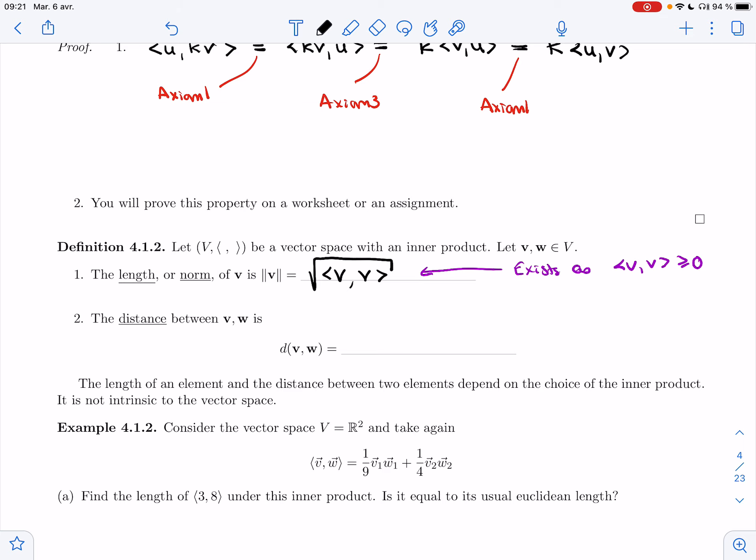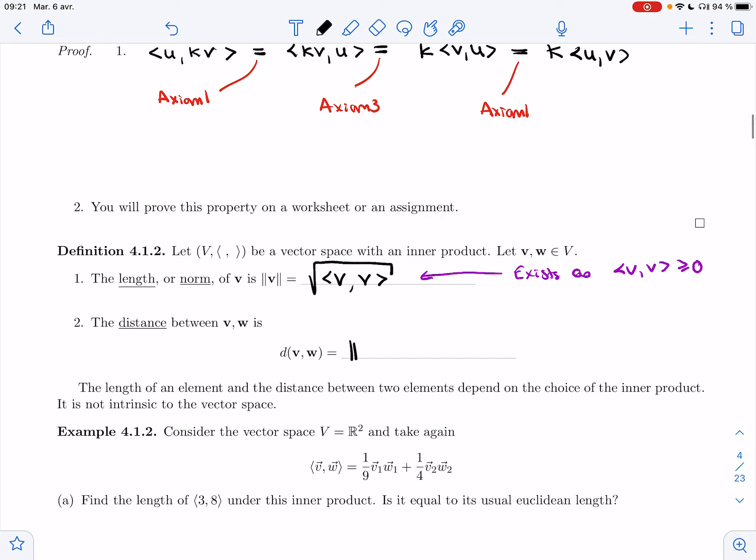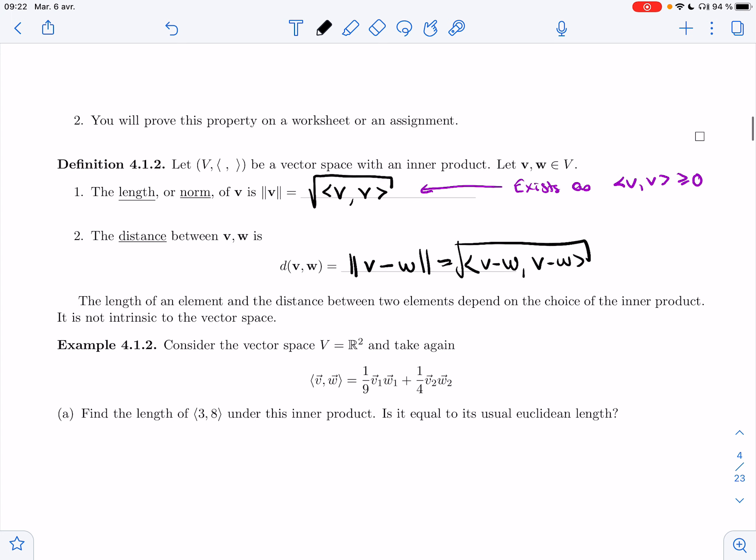And then the distance between v and w, that's just the length of v minus w. And so it's the square root of the dot product. Notice that the length of an element and the distance between two elements depend on the choice of inner product. It is not intrinsic to the vector space.